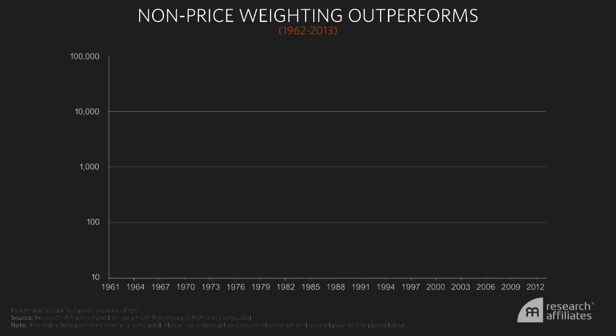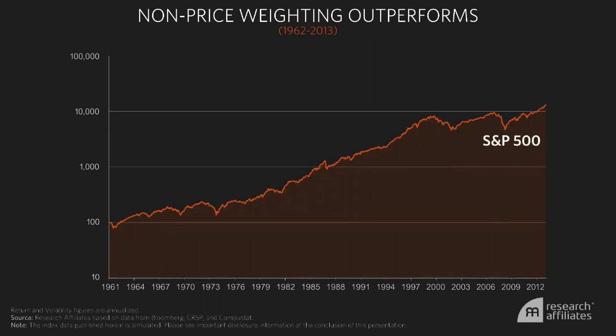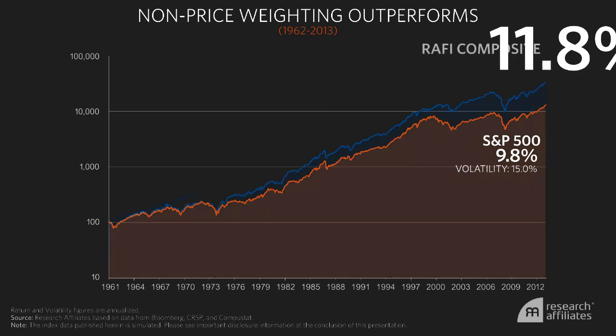Now, we can also rebalance a portfolio to fundamental measures of company size — for example, sales, cash flow, dividends, or book value. Or a simple weighted average of all four of these measures of company size. That produces what we call the Research Affiliates' fundamental index weight, or the RAFI weight. This is simply a transparent measure of company size for the purpose of rebalancing the portfolio.